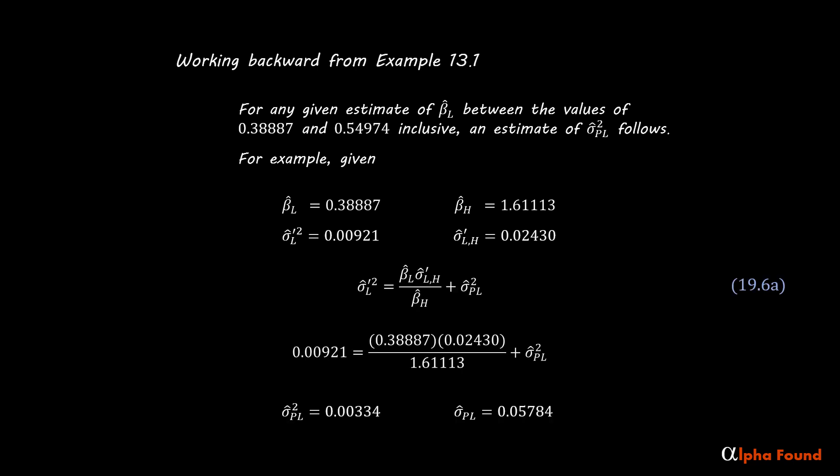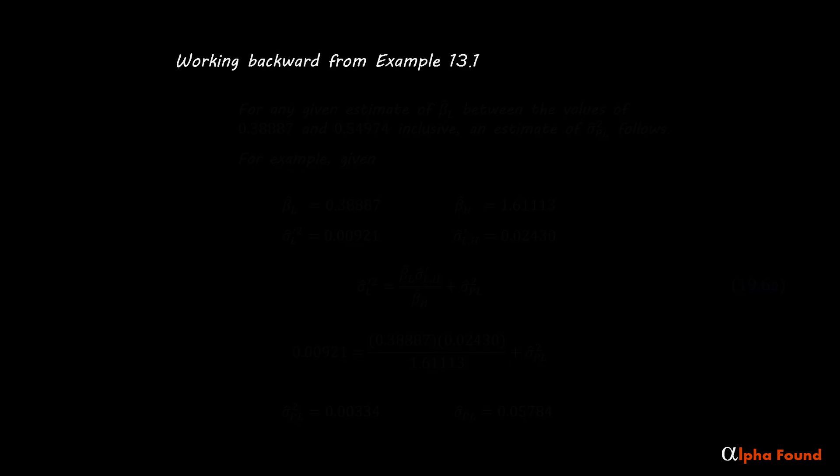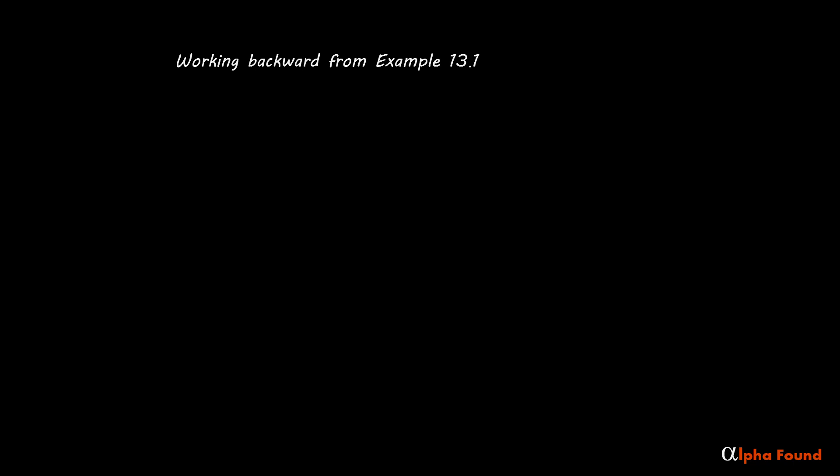With the minimum and maximum low ideal beta estimates in hand, any ideal beta estimate within that range has an associated pair of perturbation risks and a perturbation risk ratio that would generate the same low CAPM beta estimate. Using equations 19.1a and 19.1b to estimate the perturbation risks for each low ideal beta estimate and high ideal beta estimate respectively, a table of potential parameter combinations is created. Each one is possibly the combination that accurately reflects the underlying reality.